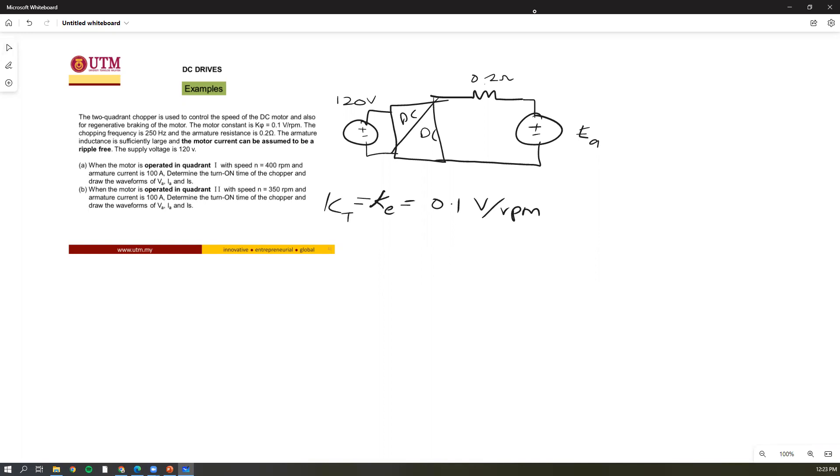The chopping frequency is 250 hertz, and the armature resistance is 0.2 ohms. We assume that the armature inductance is very large and assume that the current is almost DC current. The supply voltage is given 120 volts.